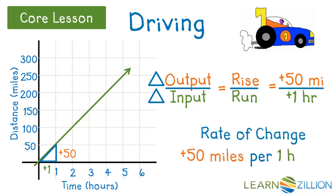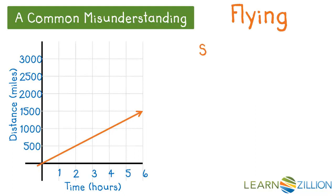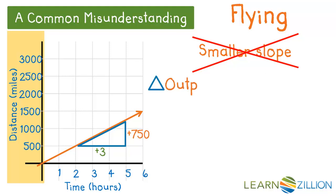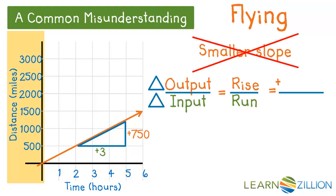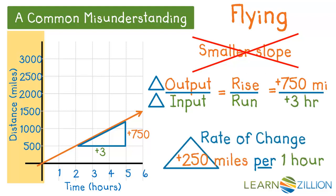A common misunderstanding is looking at how steep the line is and thinking this is a smaller slope than the graph before. Using the scale is critical to determine the change in output. Here the change in output is 750 miles for a change of positive 3 hours. When we calculate the slope, 750 miles over 3 hours gives us a rate of change of positive 250 miles per hour — much faster than a car.